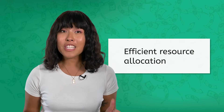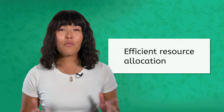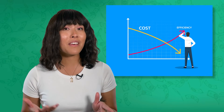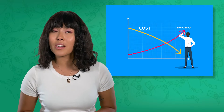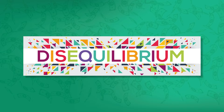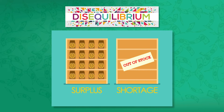Finally, market equilibrium leads to efficient resource allocation. Avoiding a surplus means that resources can be put to their best use and not wasted on products that can't be sold. It also maximizes efficiency and reduces unnecessary costs. What happens when the market is in disequilibrium? Basically, all of the bad things we just avoided — you can see price instability, surpluses or shortages, or waste and inefficiency.